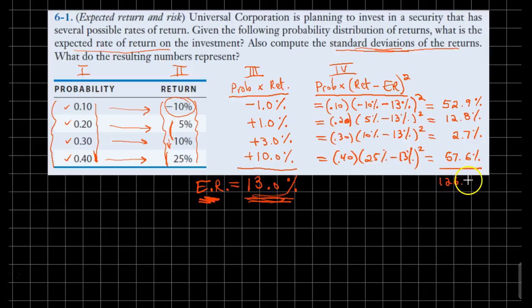Now we can add up these numbers. And I believe it should be 126%. That should give us the variance. The variance of this probability distribution. But we really need the standard deviation.